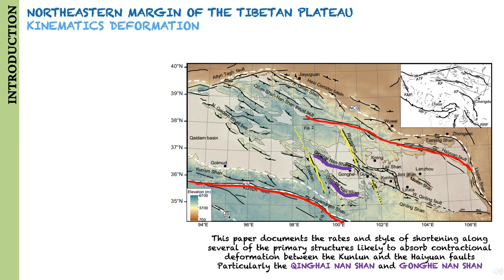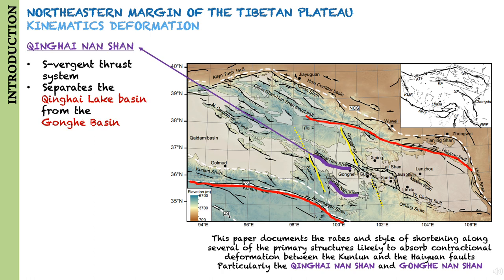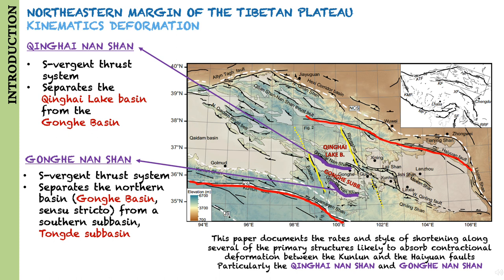One of the most prominent structures interior to northeastern Tibet is a south-vergent thrust system associated with the Qinghai-Nanshan, which bounds the northern Gonghe Basin for around 200 km along strike. Likewise, in the southern part of the basin, a second south-vergent fault network bounds the Gonghe-Nanshan and separates the northern basin from a southern sub-basin referred to as the Tongde sub-basin.